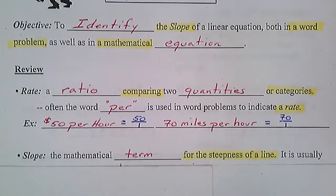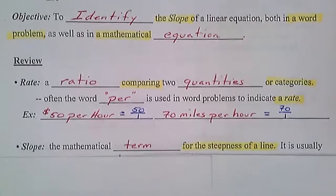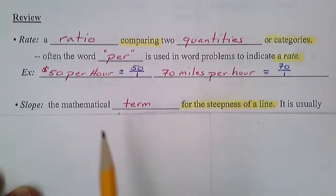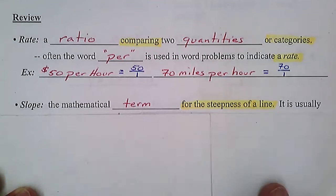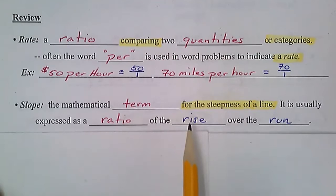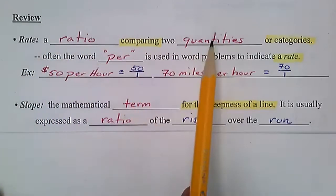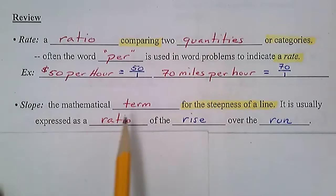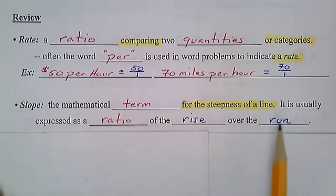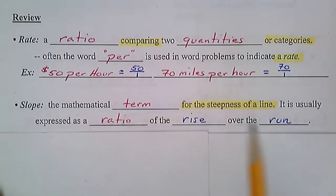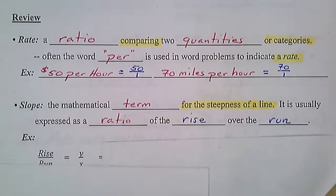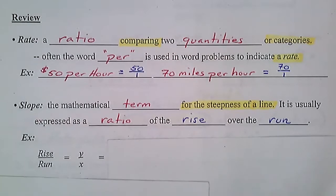Slope is a mathematical term for the steepness of a line — it's how we measure how steep a line is. It's usually expressed as a ratio of the rise over the run. So a rate is a ratio comparing two quantities, and a slope is a ratio of the rise over the run — we're comparing the rise per the run.